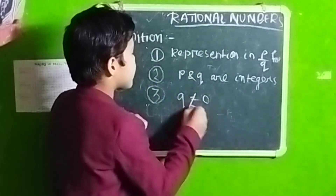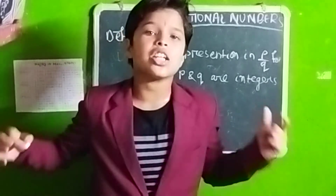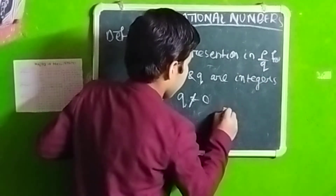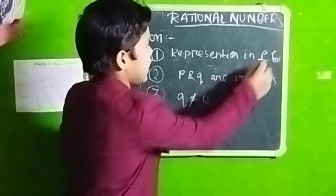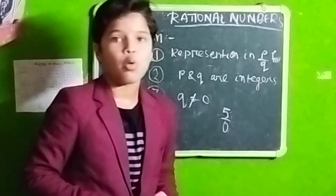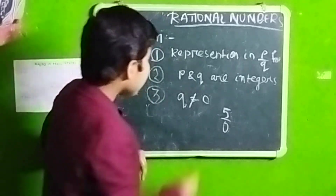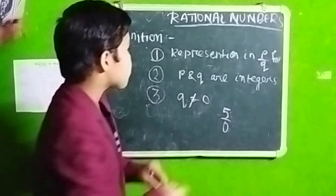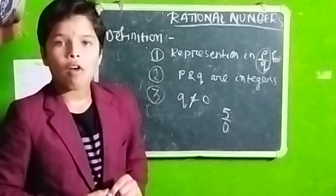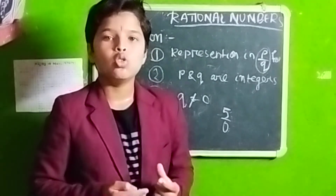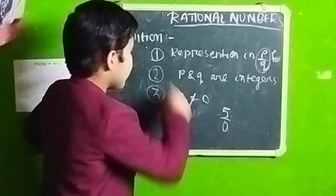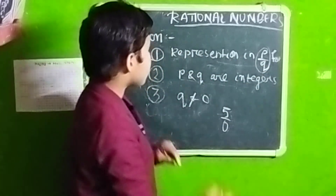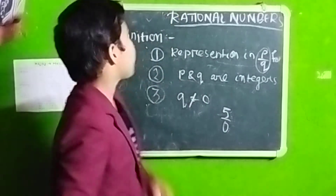The third point is that Q should not be equal to 0. This is the main point you need to remember. For example, 5 by 0 would appear to be in P by Q form, but it is not a Rational Number because Q should not be equal to 0. The denominator can be 5, 6, 3 — it does not matter — but it should not be 0. So the three points for the definition are: representation in P by Q form, P and Q must be integers, and Q must not equal 0. This is the definition of Rational Numbers.